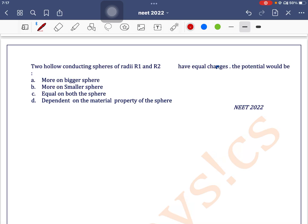Two hollow conducting spheres of radii R1 and R2, where R1 is greater than R2, have equal charges. The potential would be... We know that potential is given as V equals KQ divided by R.